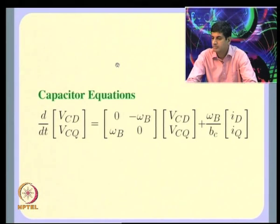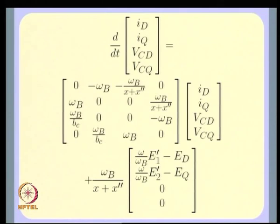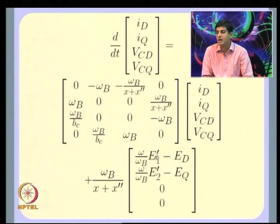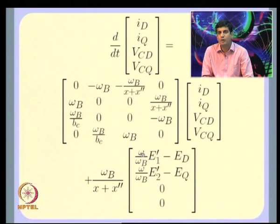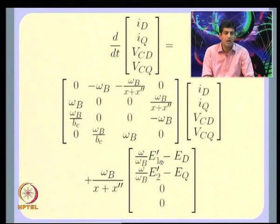The capacitor equations were written in the ABC frame of reference, then converted to upper-case D and Q variables. Remember the upper-case D and Q variables are obtained using a transformation like Park's transformation, but instead of theta we take a fixed omega_naught*t, where theta is the actual angular position of the synchronous machine.